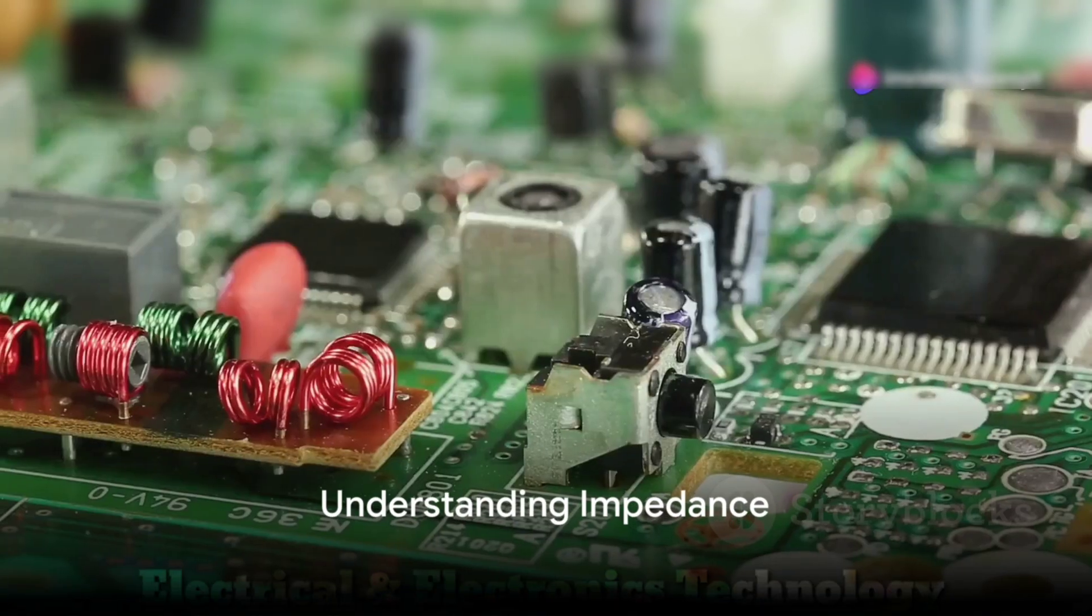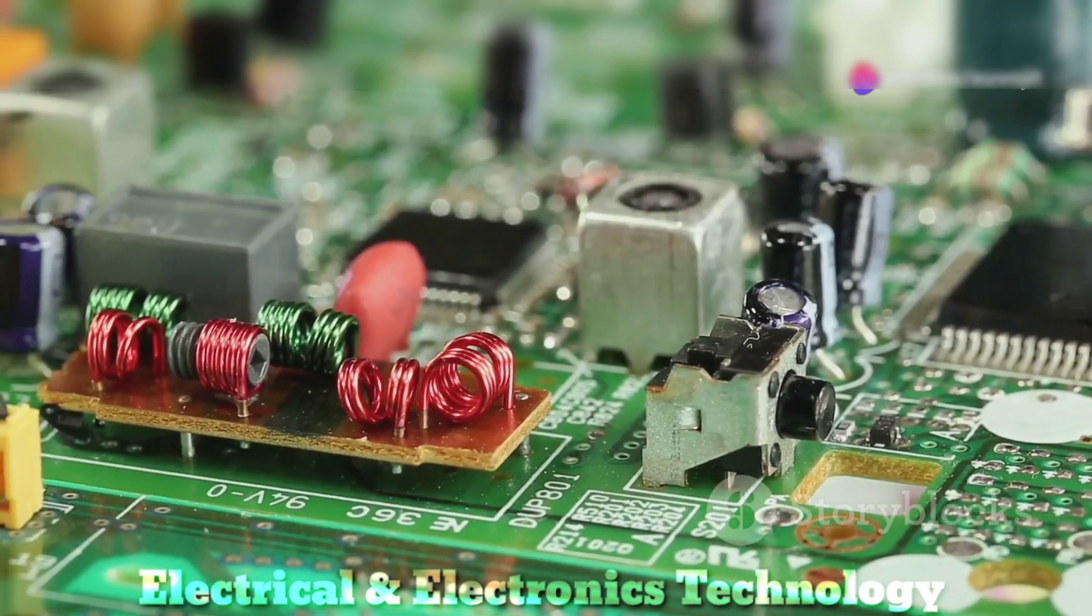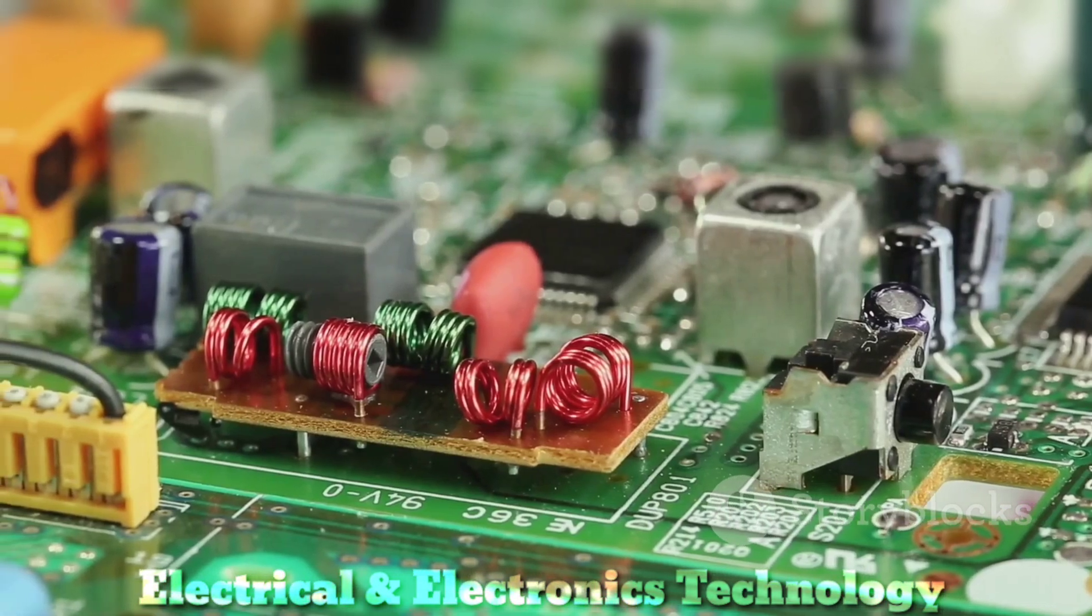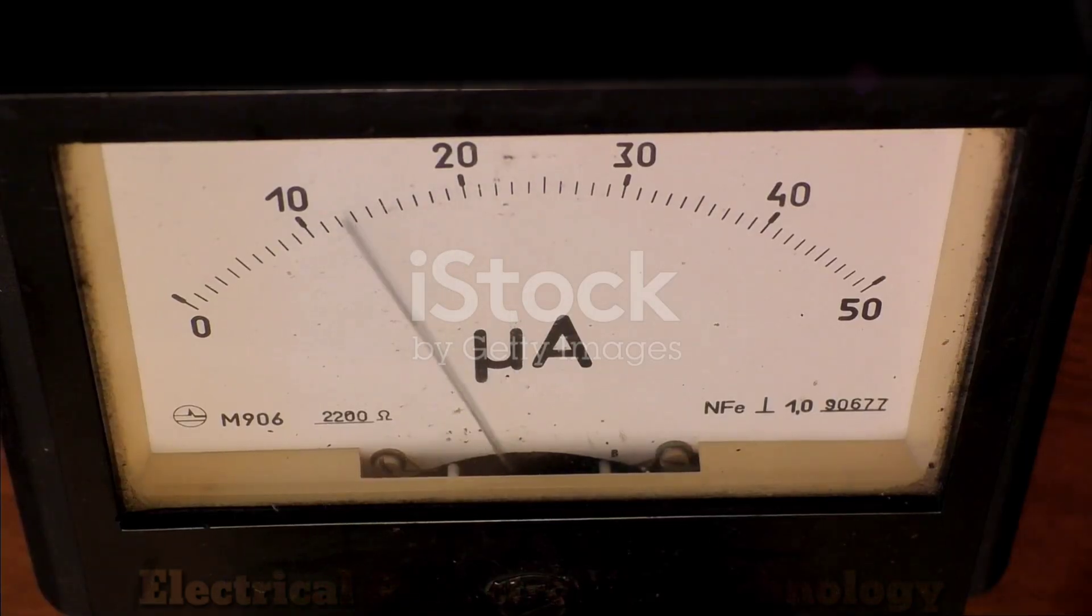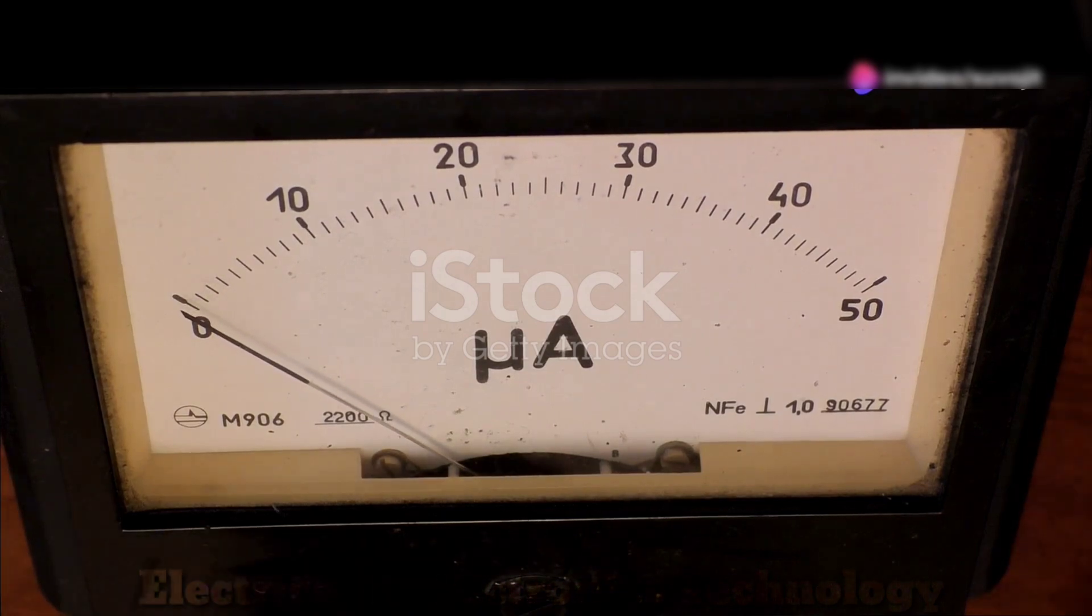Finally, we have impedance. Impedance is the total opposition that a circuit presents to the flow of alternating current. It takes into account both the resistance and the reactance of the circuit. Impedance is represented by the letter Z and, like resistance and reactance, is also measured in ohms.